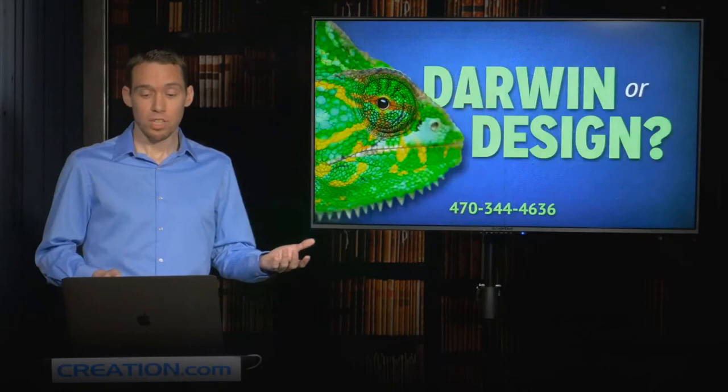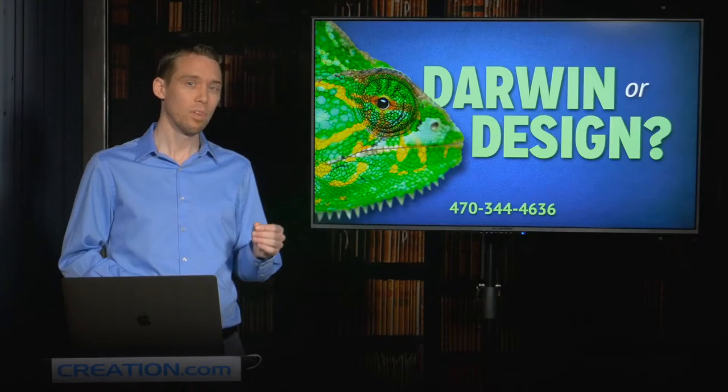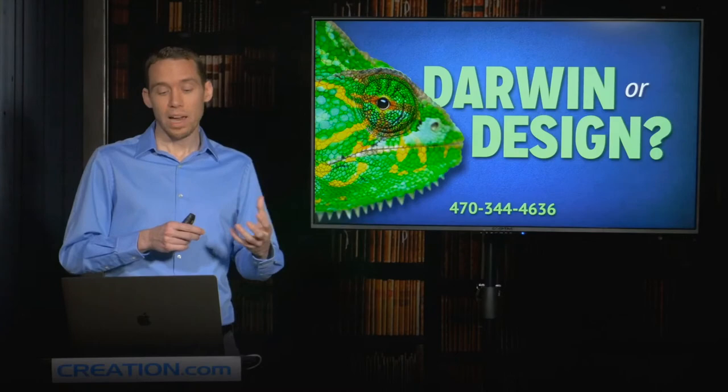Let's return then to our focus, which is on living things. And we want to ask this question, Darwin or design? How did living things come about? Were they engineered by an ingenious creator, as the Bible teaches? Or did they come about through some unguided naturalistic evolutionary process as Darwin believed and popularized?